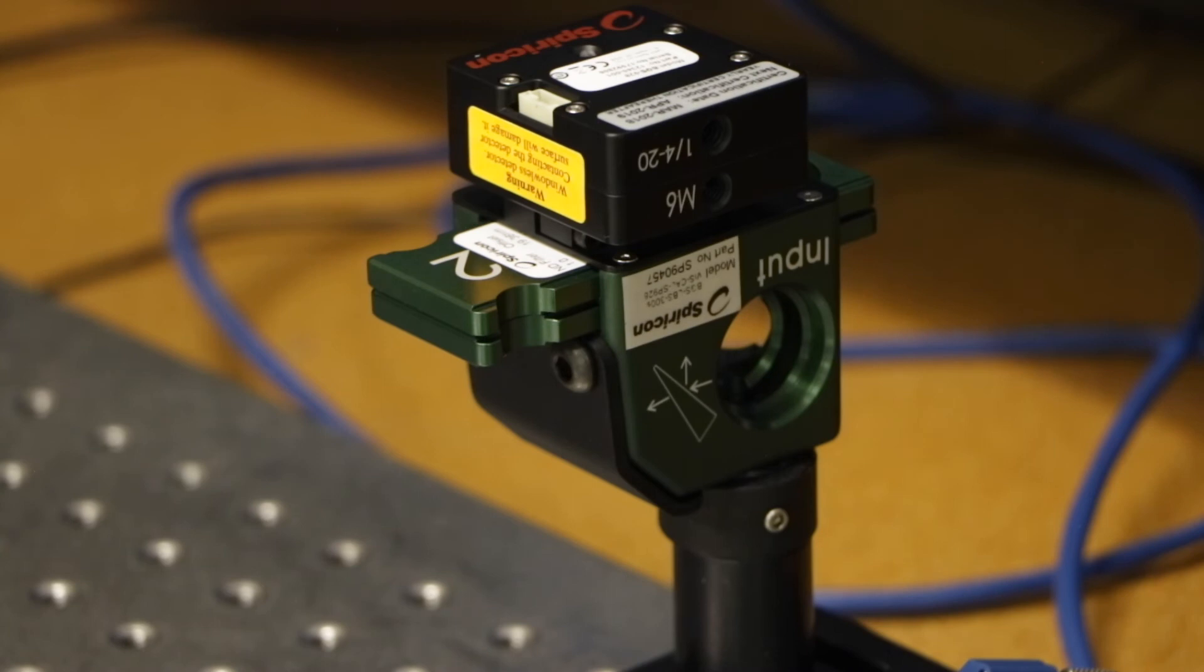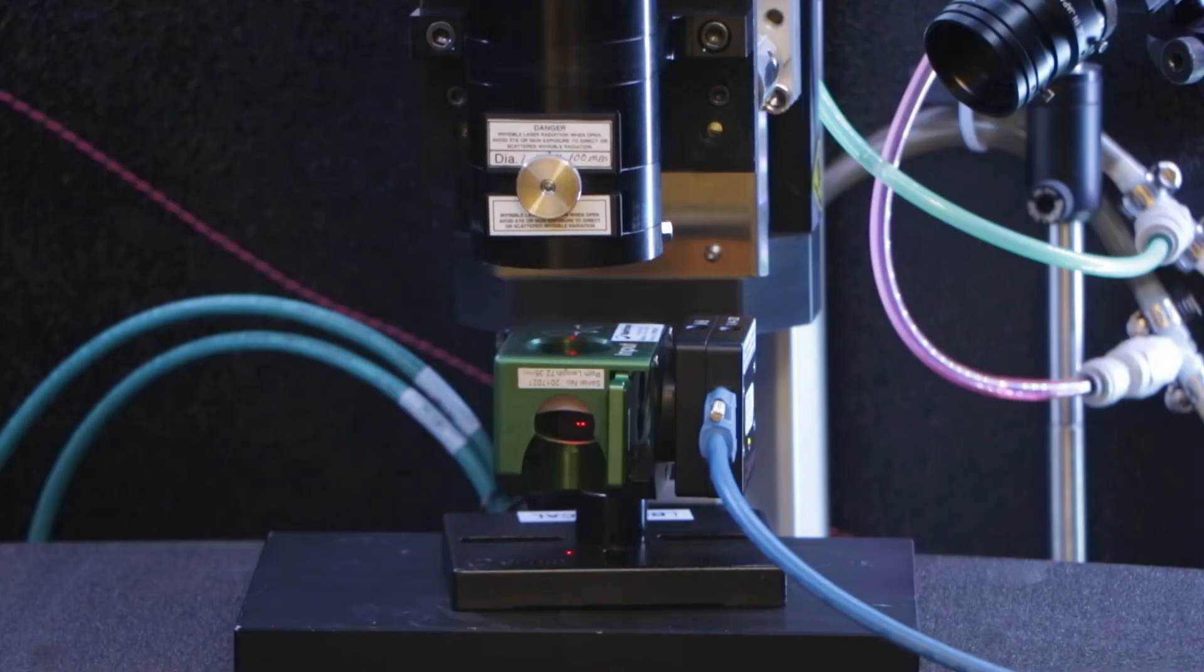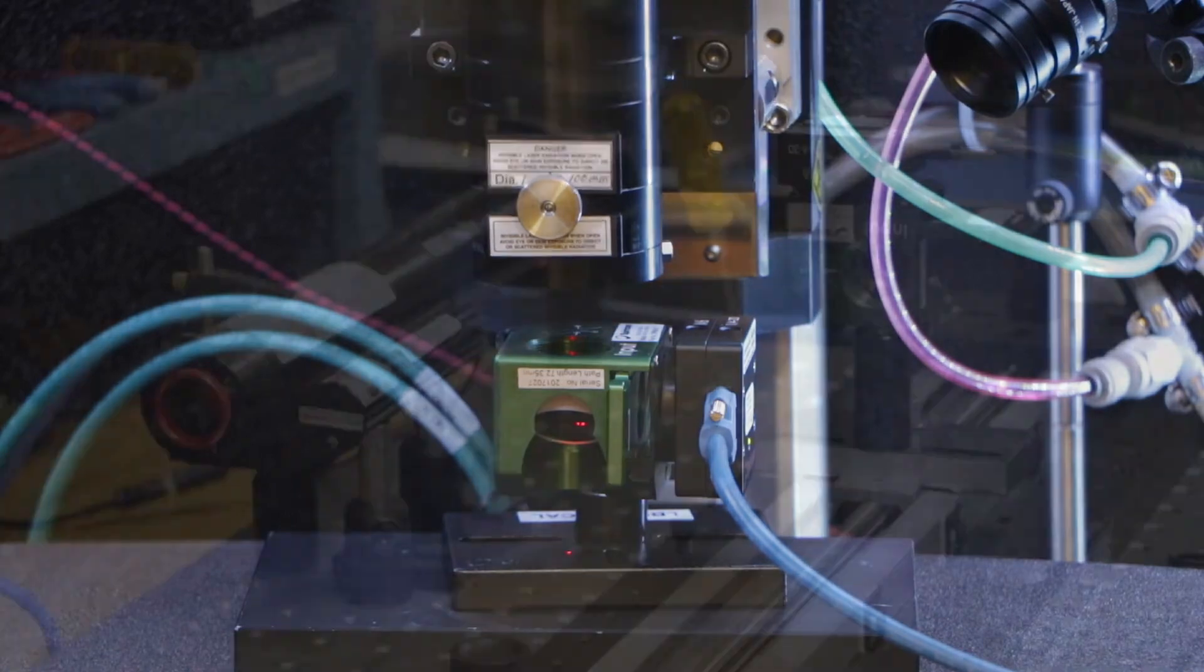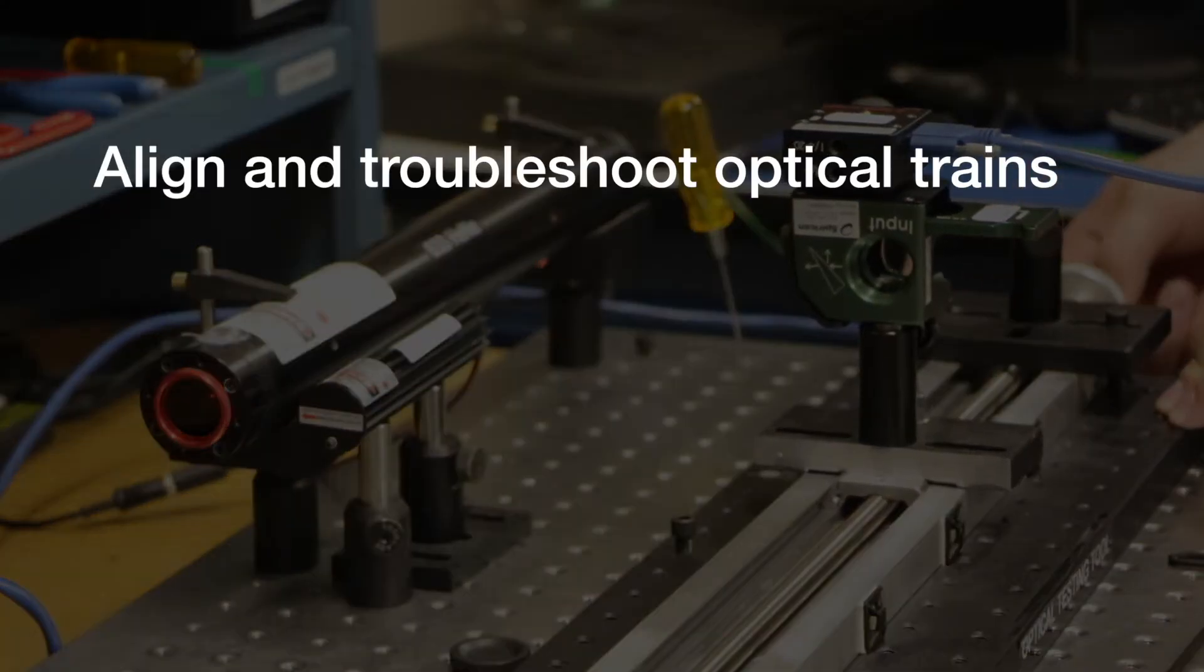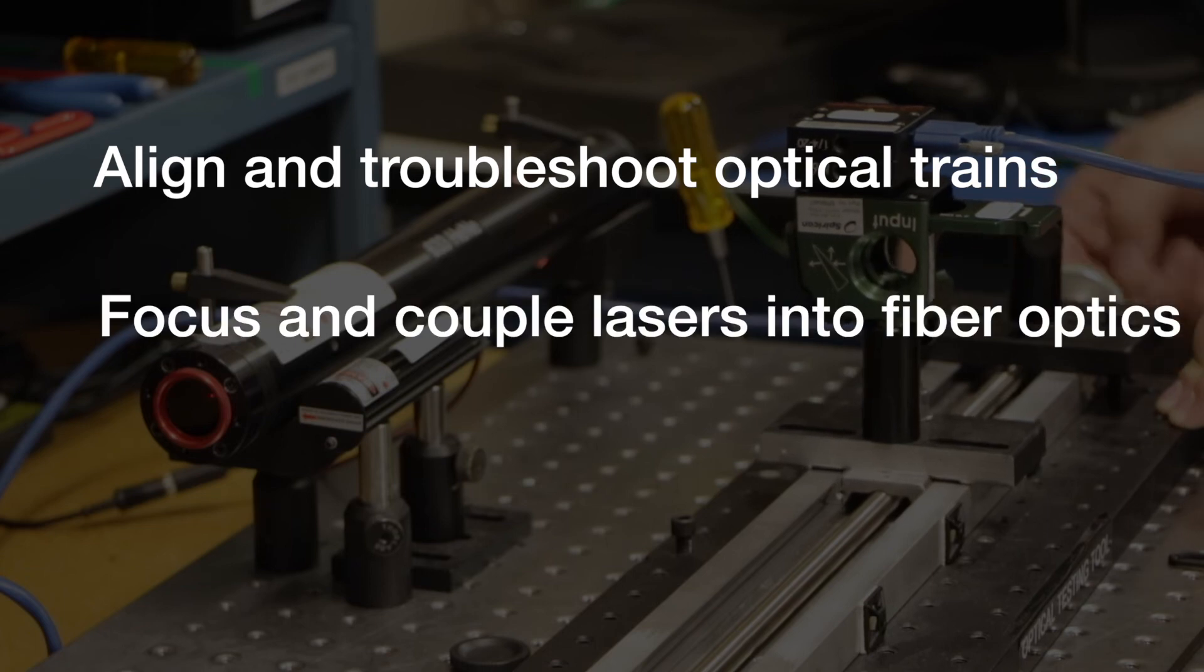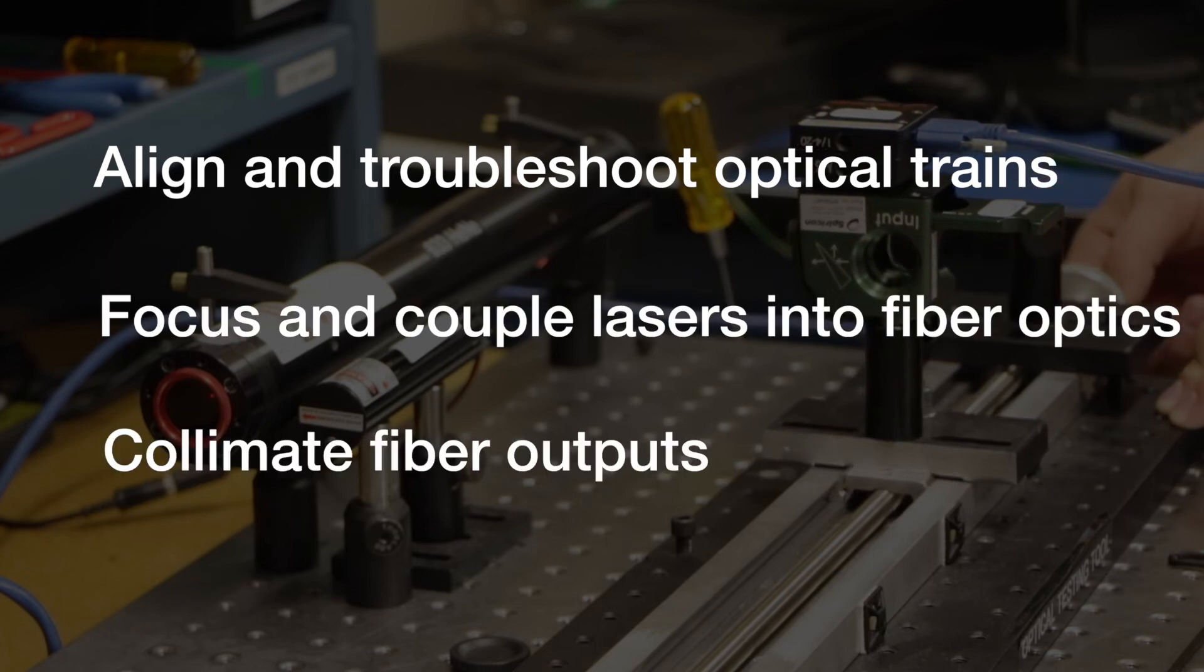The FSA features a compact and lightweight design making it ideal for use in tight spaces or field service use. Customers are currently using these systems to align and troubleshoot optical trains, focus and couple lasers into fiber optics, and collimate fiber outputs with masterful resolution and repeatability.